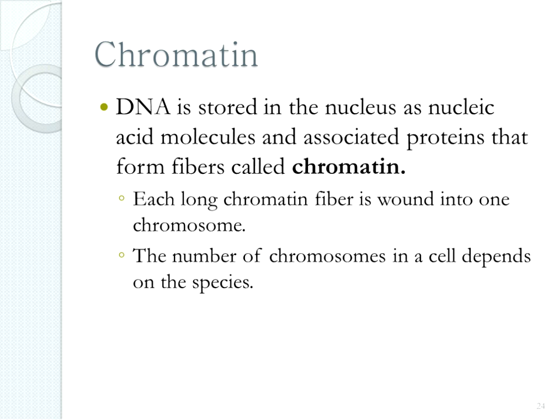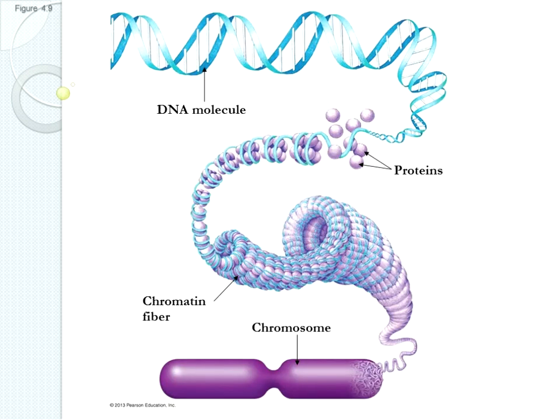DNA is stored in the nucleus as the long double helix wound around proteins called histones, and the DNA wound around these proteins forms fibers called chromatin. Chromatin can be wound up into a chromosome. By wrapping the DNA around these proteins, we keep all that DNA organized without it getting tangled. There's a lot of DNA on the inside of every cell that has to stay organized.